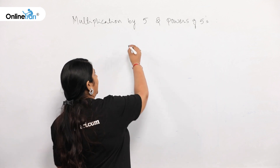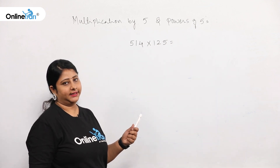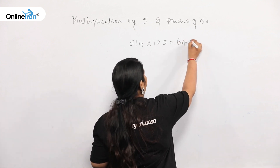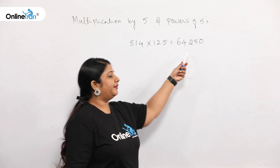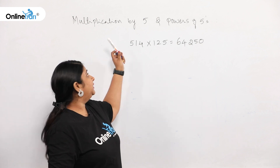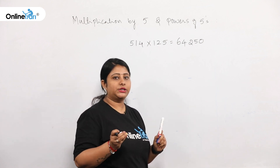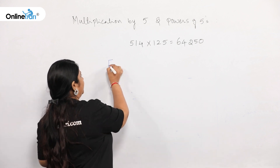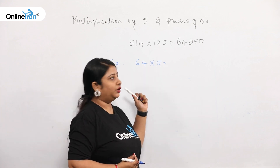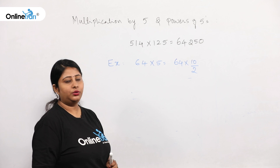Before starting the technique, here is a question: 514 × 125. Answer this in 10 seconds. With the traditional method it is very difficult. The answer is 64,250. Now I am going to explain how we can write this in 10 seconds. For multiplication, I am taking a simple example: 64 × 5. Can I write this as 64 × 10 divided by 2? Yes — it is still 64 × 5.